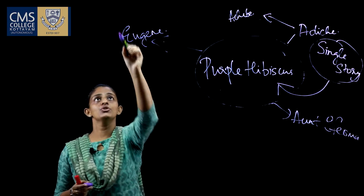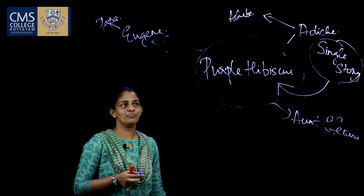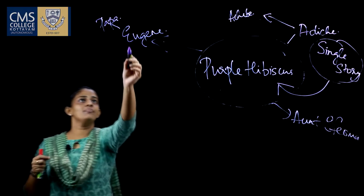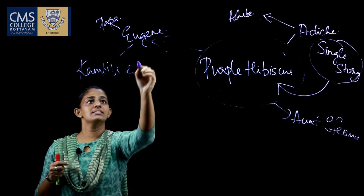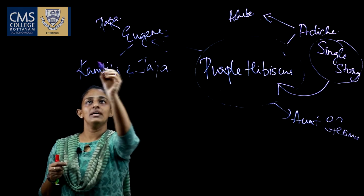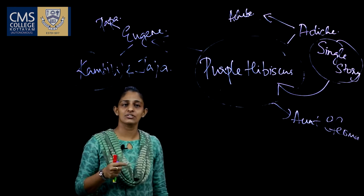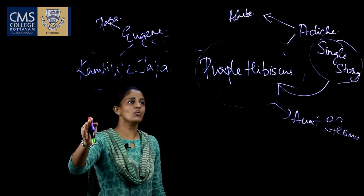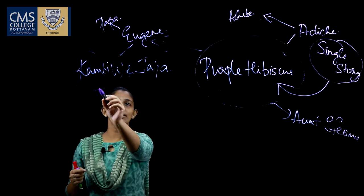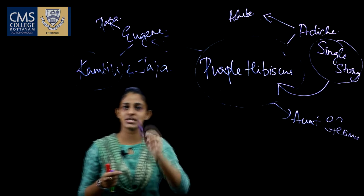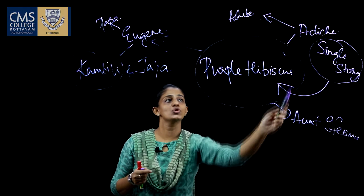Now, who is Eugene? Eugene is the papa figure represented in this novel. Eugene's children are Kambili and Jaja. Kambili is very important for us as she is the narrator of the whole novel. We see the novel through the eyes of Kambili, who is just a 12-year-old girl. It is Kambili who tells us what happens at Eugene's house, what happens at Aunt Ifeoma's house, and what is to do with the Purple Hibiscus.